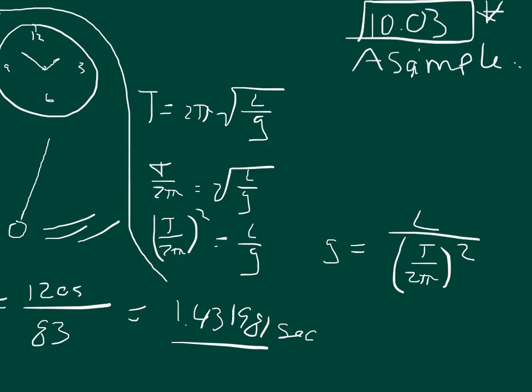The problem tells us that the length of this thing is 52.1 centimeters. So we're going to convert that to meters. So 0.521 meters divided by, and we know that the time is 1.431981 seconds.